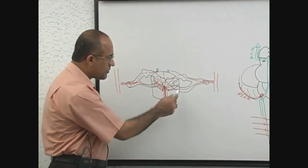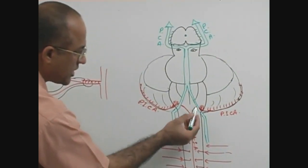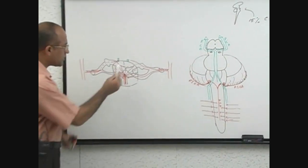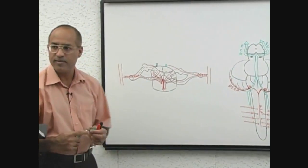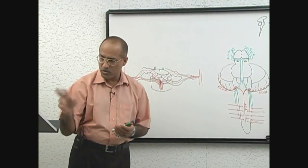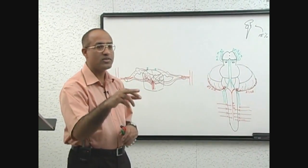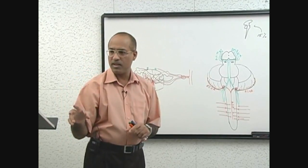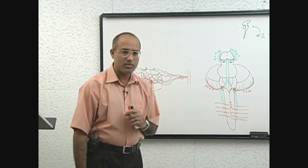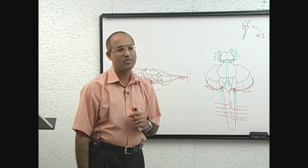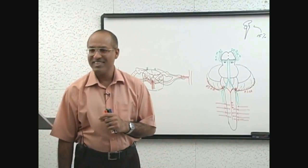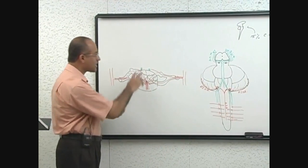We know about the origin of anterior spinal artery, that anterior spinal artery originates from vertebral arteries. Who knows the origin of posterior spinal arteries? From where do the posterior spinal arteries originate? Everyone knows the anterior spinal arteries are coming from vertebral arteries. What about posterior spinal arteries?